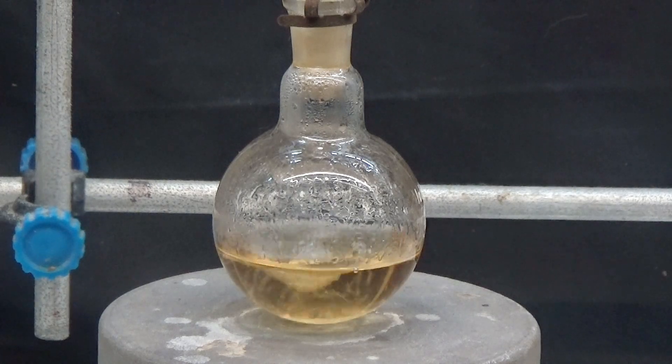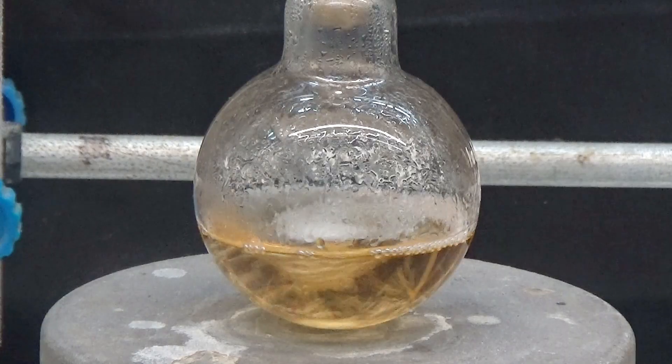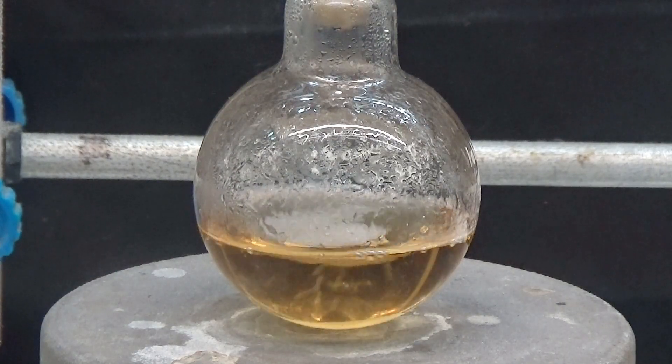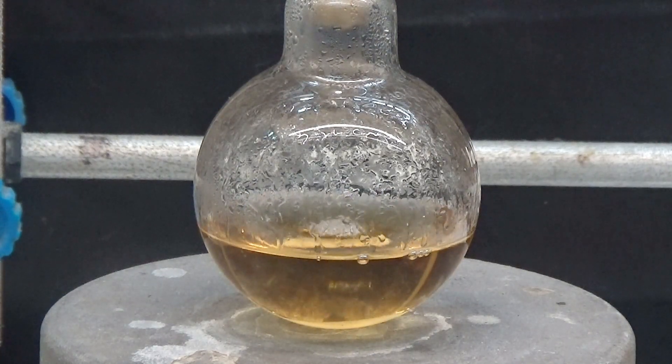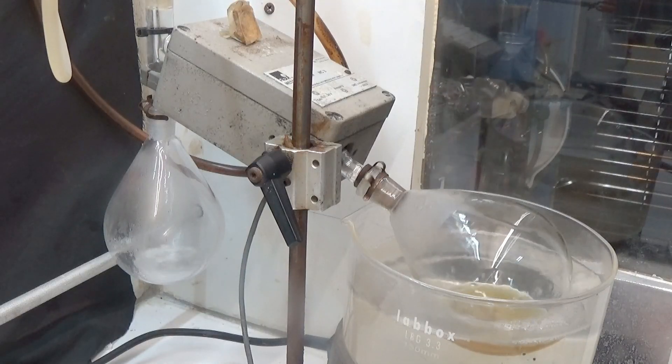Heating it at reflux for 90 minutes is necessary to complete the hydrolysis. Allow to cool and extract with several portions of ether, then dry with sodium sulfate or anhydrous magnesium sulfate. Evaporate the ether in a hot water bath.